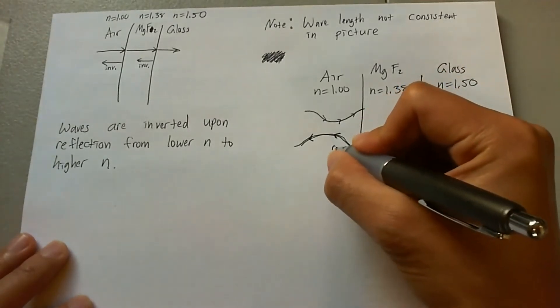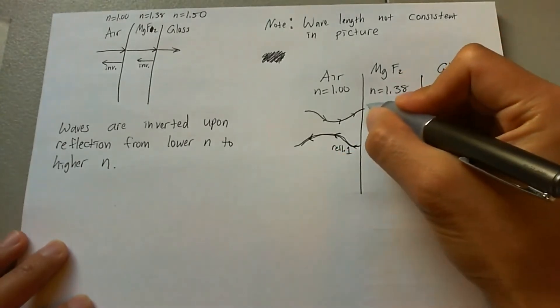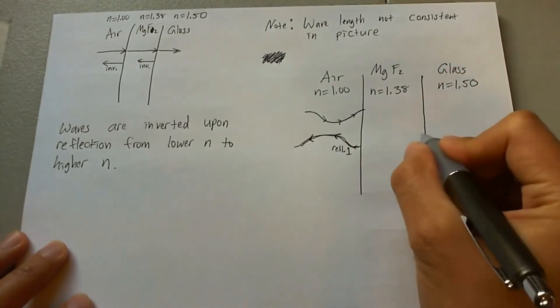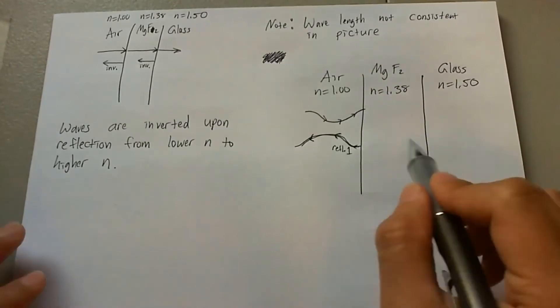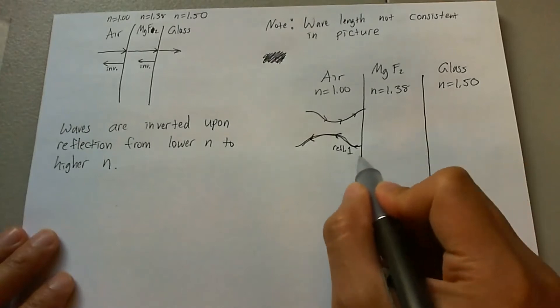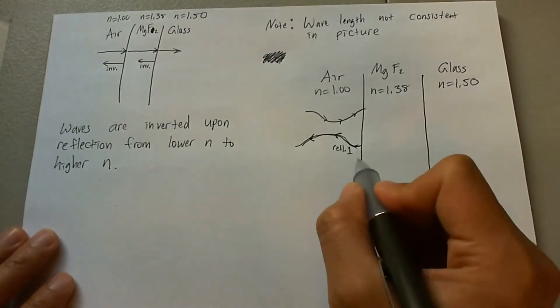We'll call this reflection one. And then so the incoming wave that goes past this media is going to then eventually hit the second and then reflect it. So here's where we get our trial and error, because you want the reflected wave off of glass to interfere with the first reflected wave such that it looks the opposite of it.